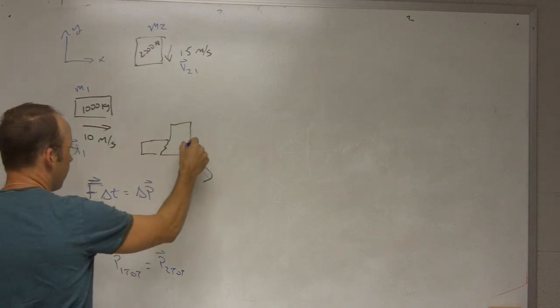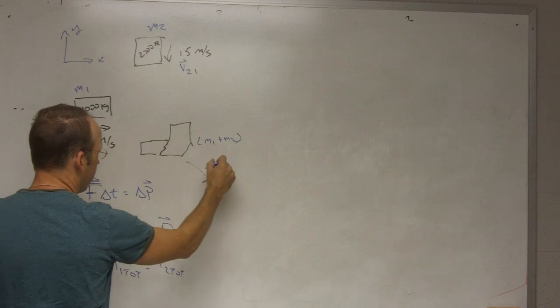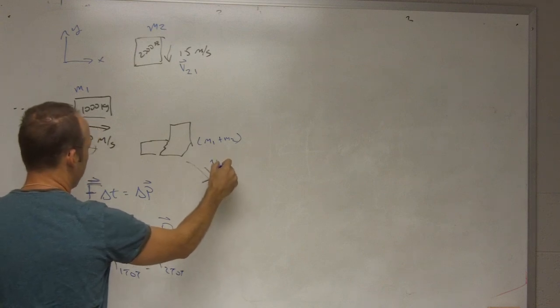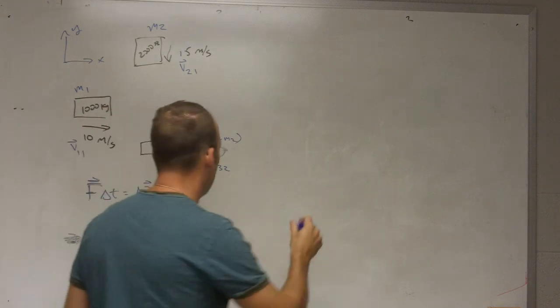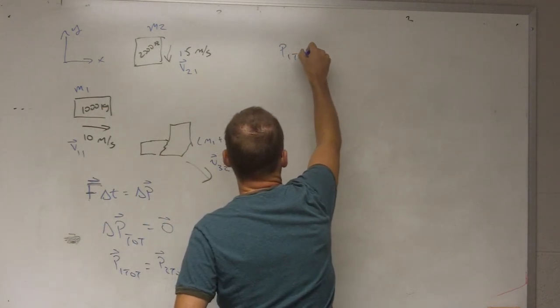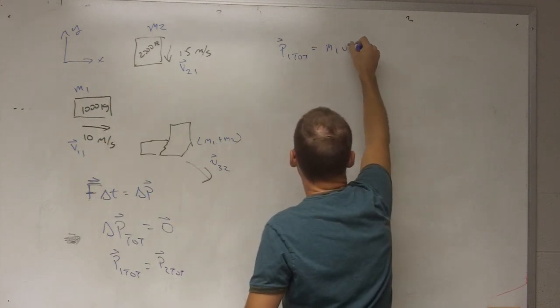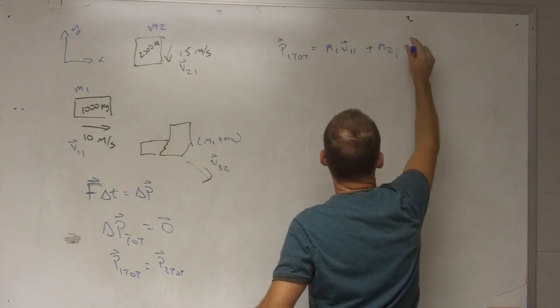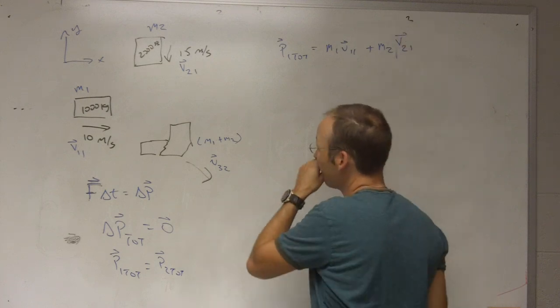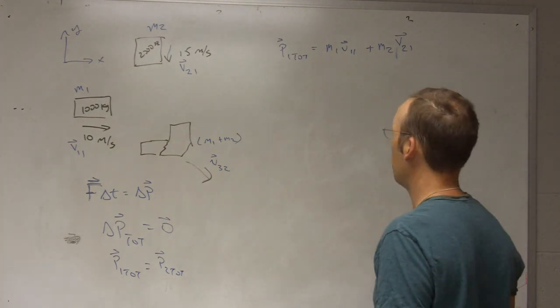Because that's the velocity of object one at the beginning. Okay. We don't need that in this case, but that's M two V two one. And then after they collide, we'll call this mass M one. And it'll have a velocity vector V three two. See, I didn't really need that, because it's a new object. But, okay. So, if I write down the initial total momentum, I get P one total, or initial momentum.